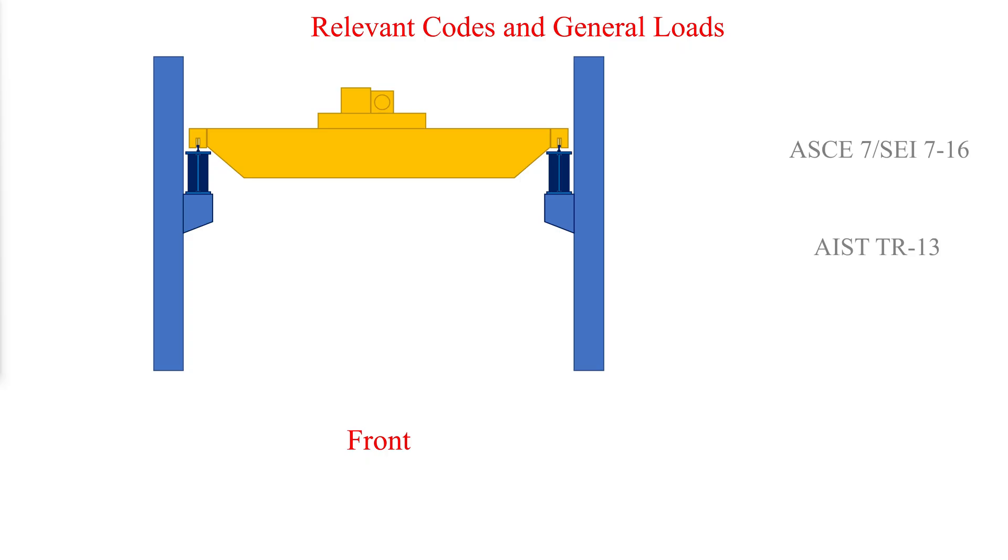The provisions of ASCE 7-16 and AIST-TR-13 for crane runway loads are summarized in this video. ASCE 7-16 is referenced by the International Building Code and is a legal requirement. AIST-TR-13 is a guideline and can be used for situations not covered by ASCE 7-16 or when specified by project specifications.